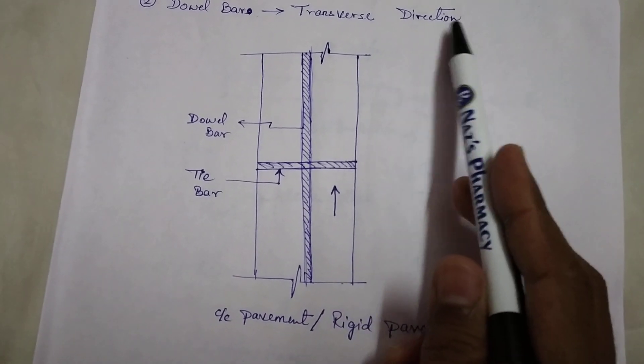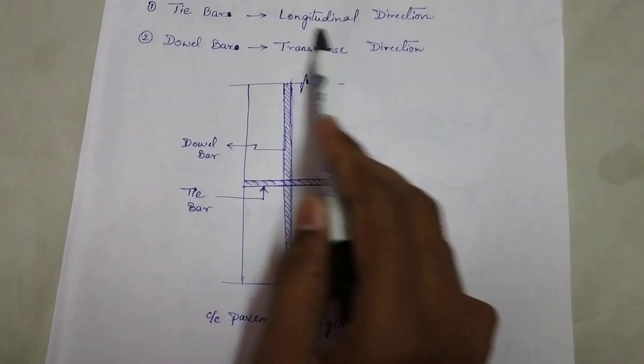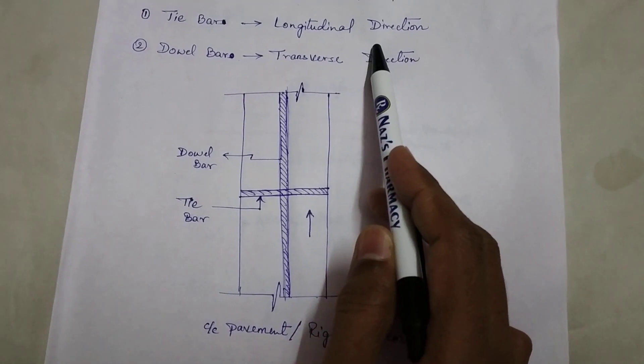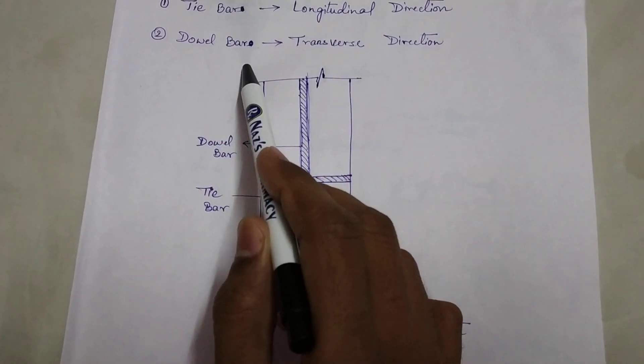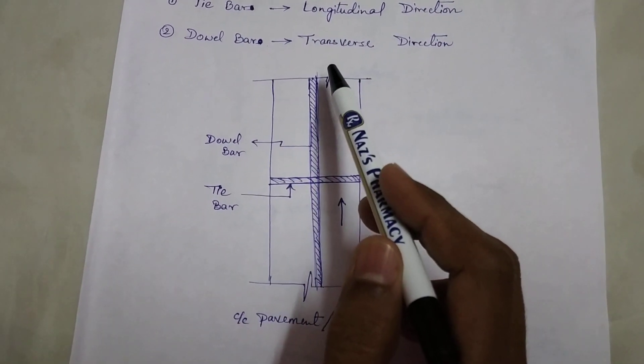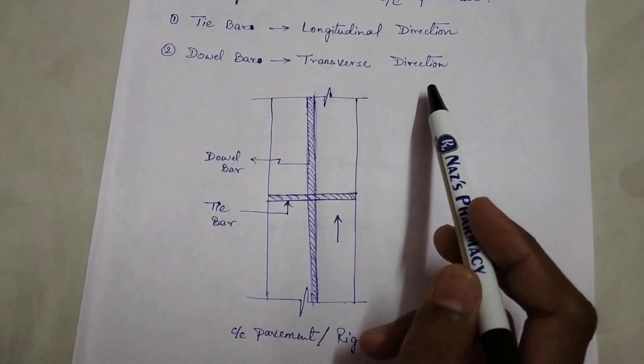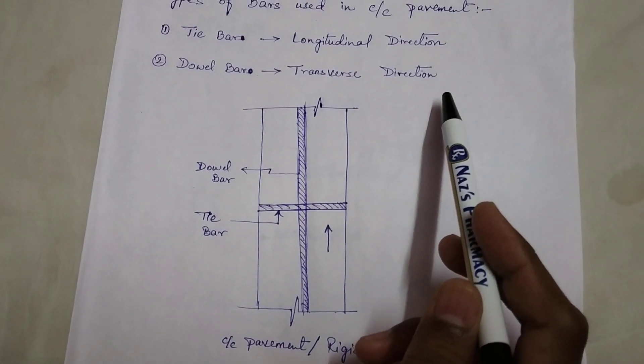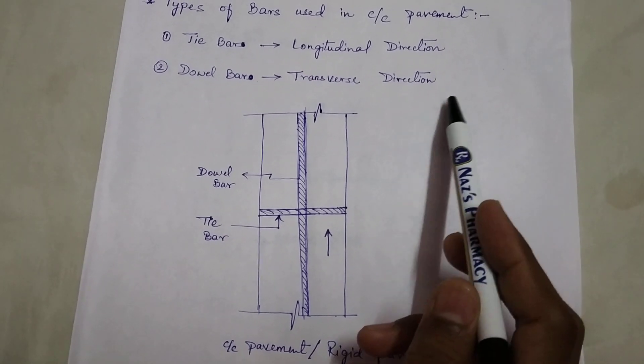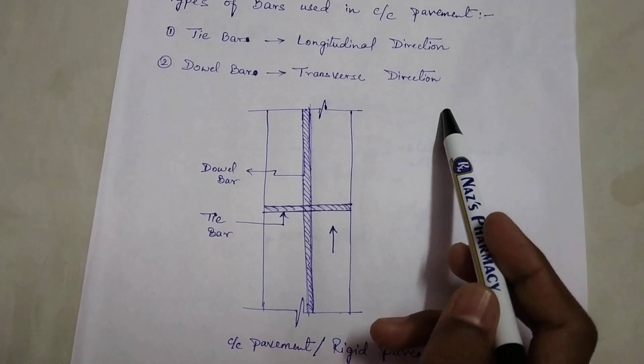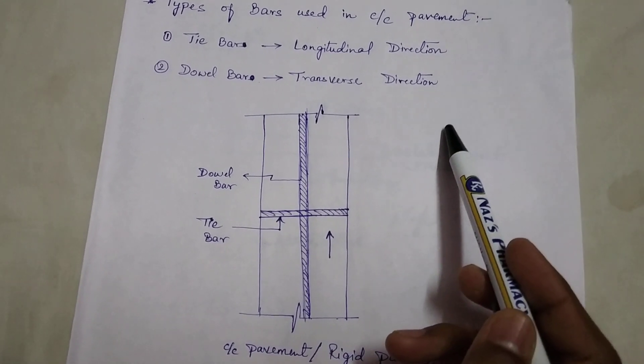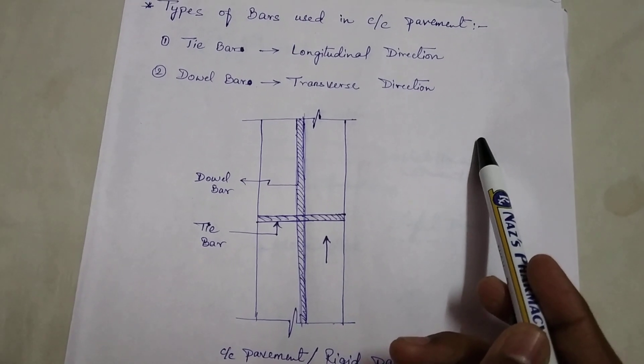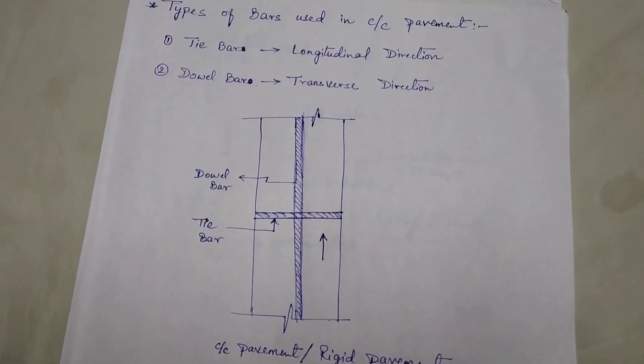Now we will discuss about the design of tie bar. The code which is required for design of tie bar and dowel bar is IRC 58-2002 which is available at my blogspot. I will mention my blogspot id in the description box. If you need you can download it through that id and latest versions are also available.